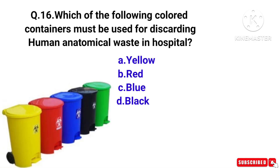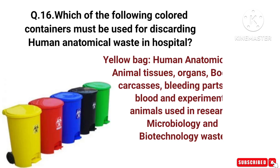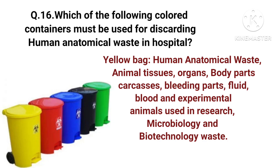Which color container must be used for discarding human anatomical waste in hospital? Options: yellow, red, blue, or black. The right answer is option A — yellow. The yellow bag is used for human anatomical waste, animal tissues, organs, body parts, carcasses, blood, fluid, and experimental animals used in research, microbiology, and biotechnology waste.